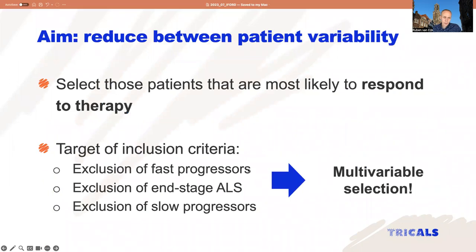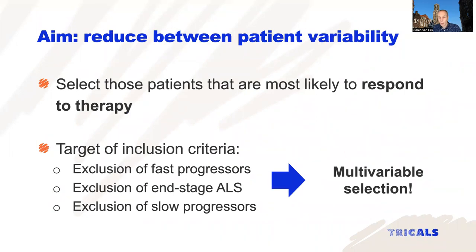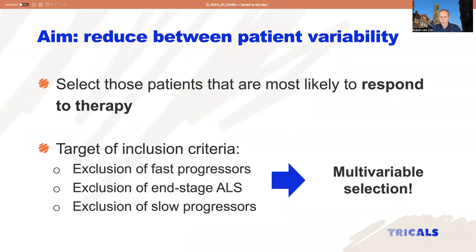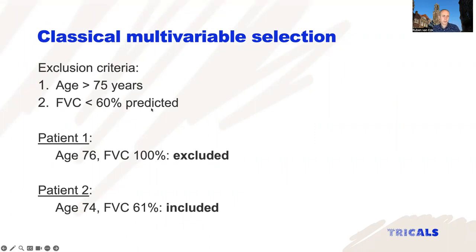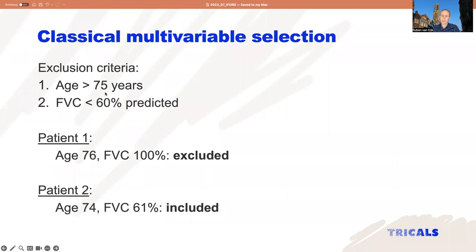If we want efficient inclusion criteria to reach these aims, we need to select patients in a multivariable way — on multiple patient characteristics. Classically we do that with several layers of inclusion criteria for a trial. For example, only patients younger than 75 years old can participate, or patients with a forced vital capacity — a lung function measurement — of at least 60%, because vital capacity says something about the stage of disease and the progression rate. Older patients are also unlikely to survive for a very long time.